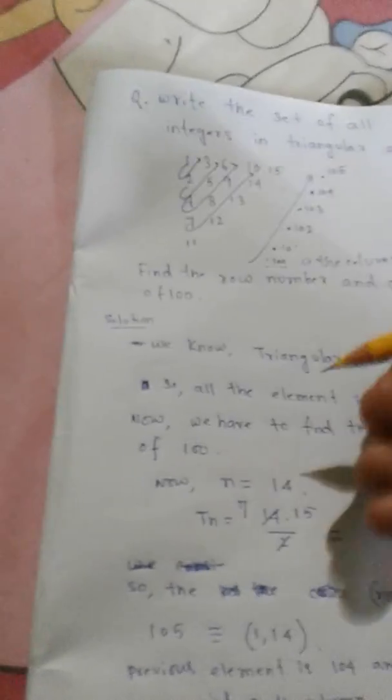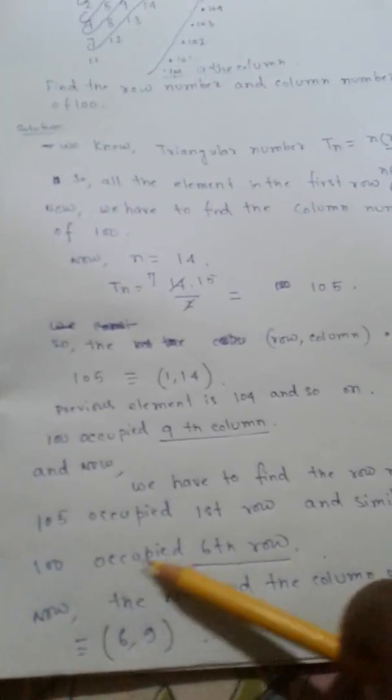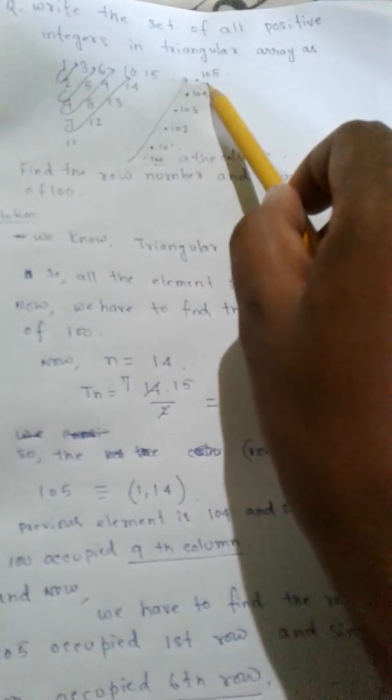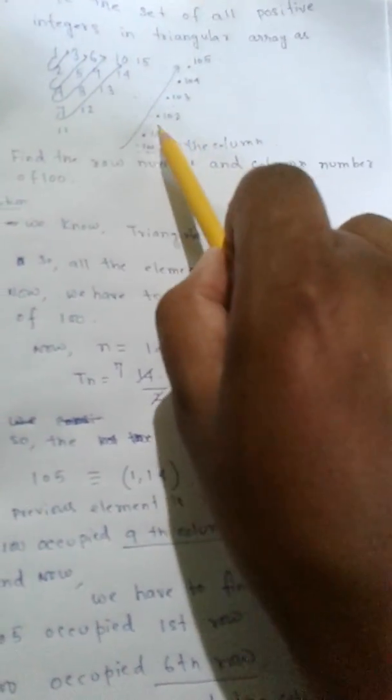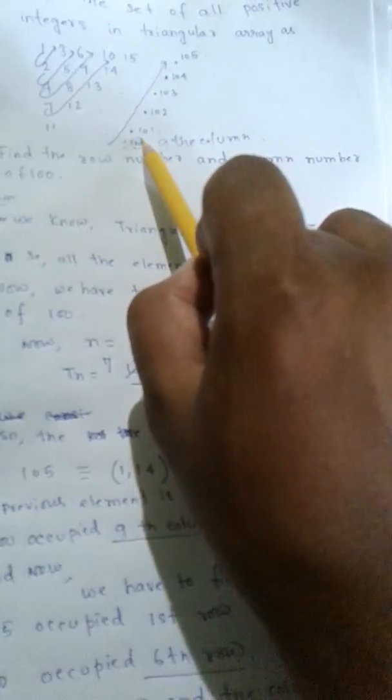105 occupies the first column and now we find the row number. 105 occupies the first row of that group, 104 the second row, 103 the third, 102 the fourth, 101 the fifth, and 100 occupies the sixth row. So the row and column of 100 equals (6, 9). This is the solution.